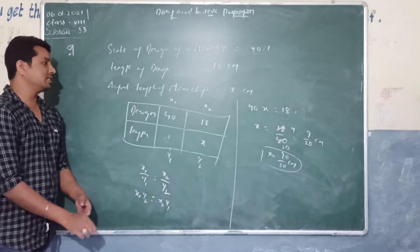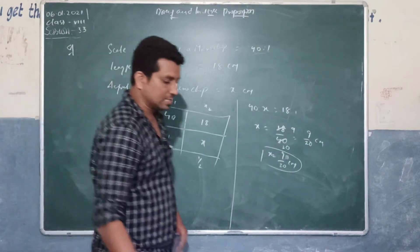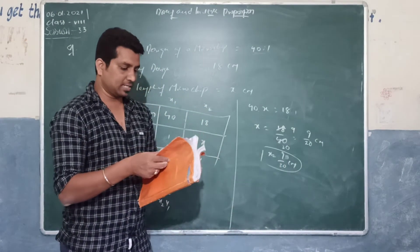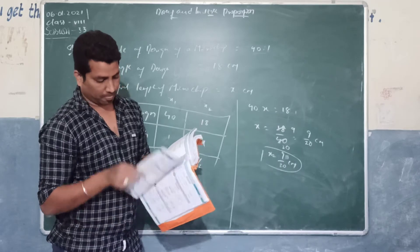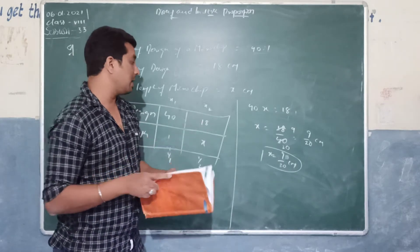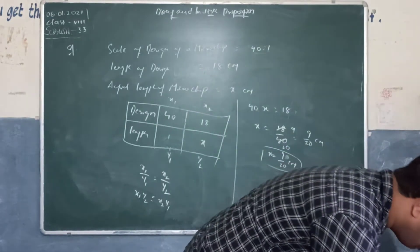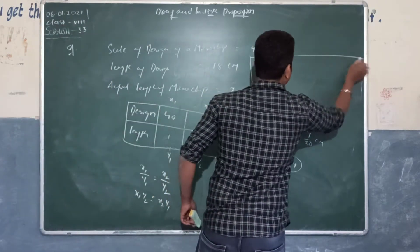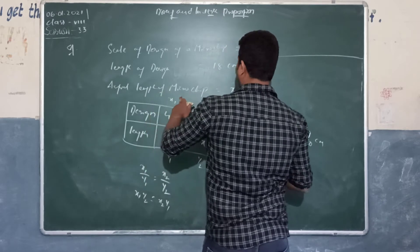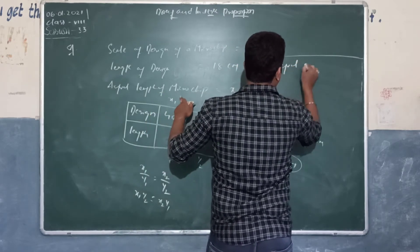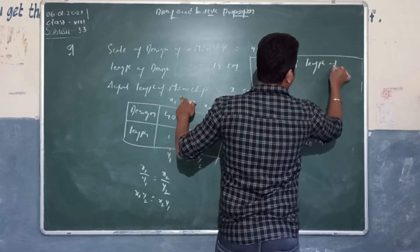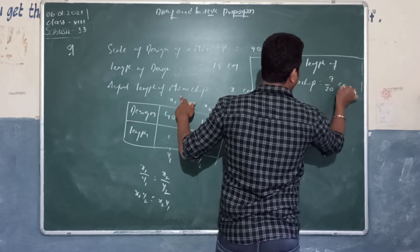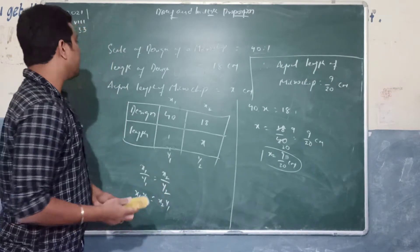X equals 9/20 centimeters. Therefore the actual length of the microchip is 9/20 centimeters. Hope you understood this problem. Let's see the last sum, and with that we can complete this exercise.